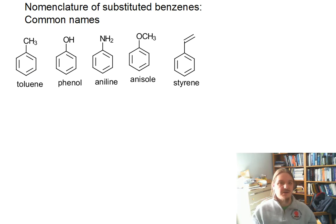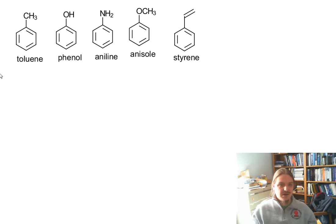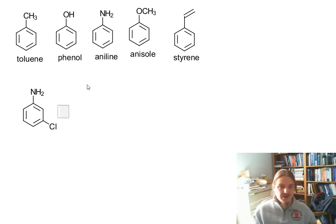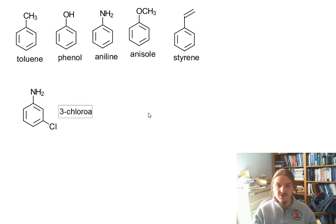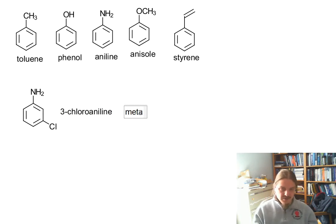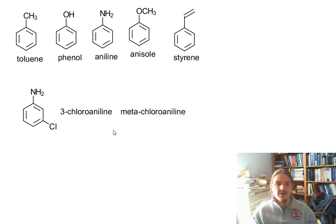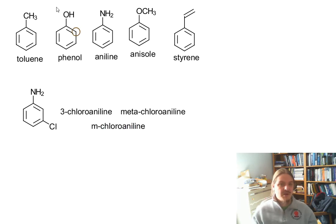To give you an example of how these can be used to construct the names of more complicated things, here I have aniline with a chlorine in it. We number these starting at the functional group that gives them their name, so the amine for aniline is at position one and the chlorine is at three. This would be 3-chloroaniline, or perfectly useful to call this meta-chloroaniline, simplified to m-chloroaniline.